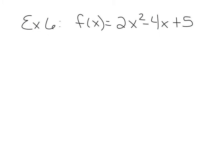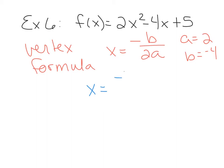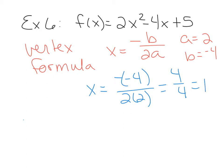Example 6 is at the top of page 255: f(x) equals 2x squared minus 4x plus 5. This is not in vertex form, so we're going to use the vertex formula: x equals negative b over 2a. For this function, a is 2 and b is negative 4. Plugging in: negative b is positive 4, over 2a which is 4, giving 4 over 4, which is 1. So the vertex has an x-coordinate of 1.